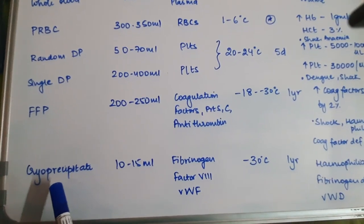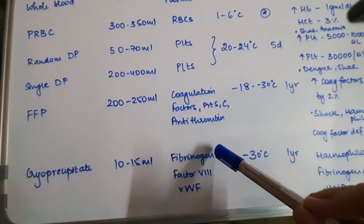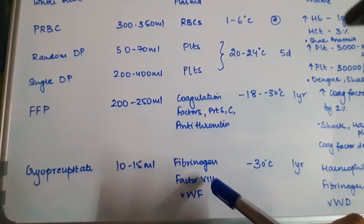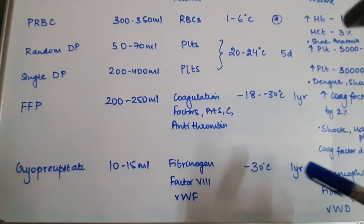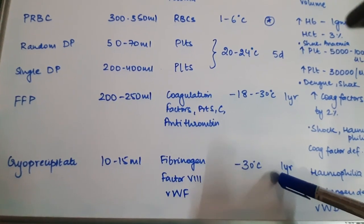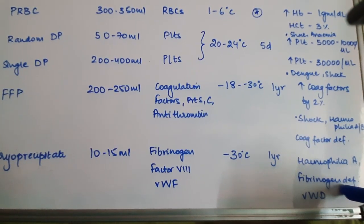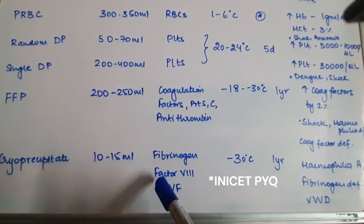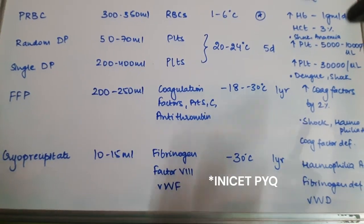In cryoprecipitate, you have 10 to 15 ml per packet. It consists of fibrinogen, factor VIII, and von Willebrand factor. Remember, factor IX is missing in cryoprecipitate. It is also stored at negative temperatures of minus 30 degrees Celsius, so it can be stored for one year. It is used for hemophilia A, fibrinogen deficiency, and von Willebrand disease, but it cannot be used for hemophilia B since it does not consist of factor IX, and factor IX is what is deficient in hemophilia B.